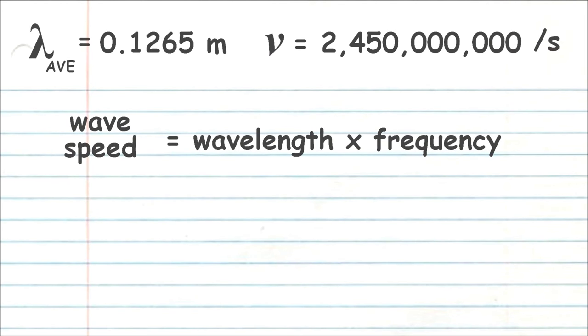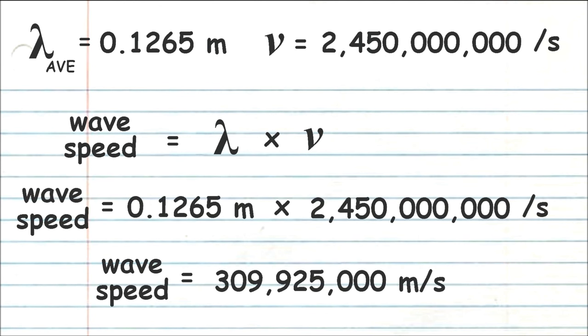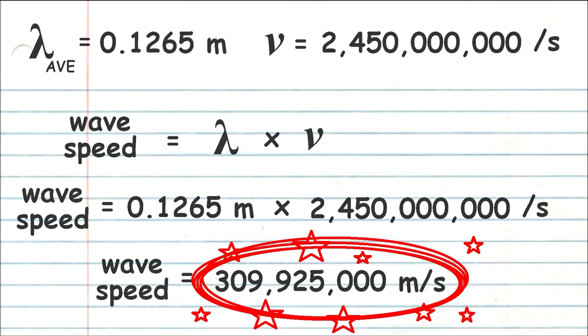The speed of any wave is its wavelength multiplied by its frequency. And so we can take the wavelength of our microwave light and multiply it by the frequency of our microwave light and get a speed of light. So here's our wave speed equation. And we can swap out the words with the symbols lambda and nu, which is what we use to symbolize wavelength and frequency in physics equations. When I plug in my values, I get for the speed of light, 309,925,000 meters per second.